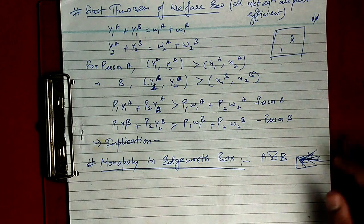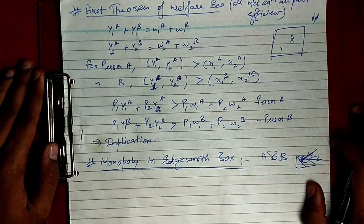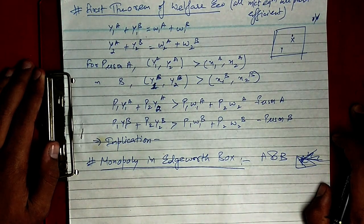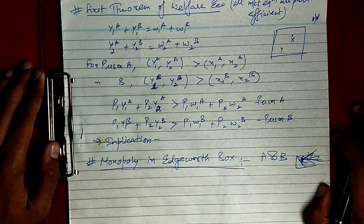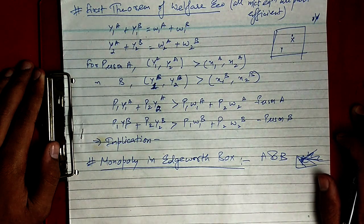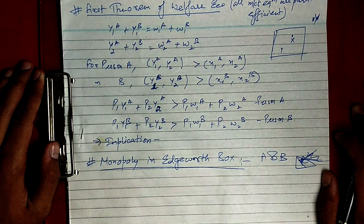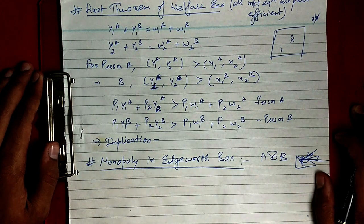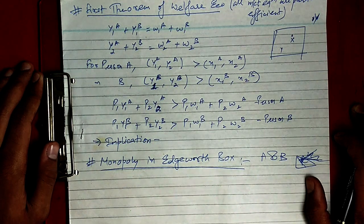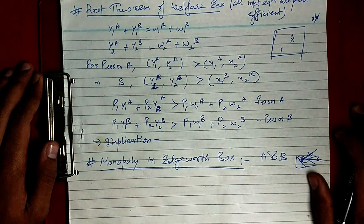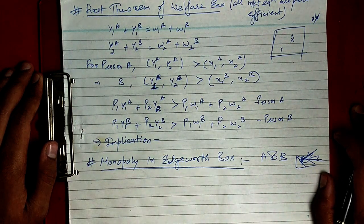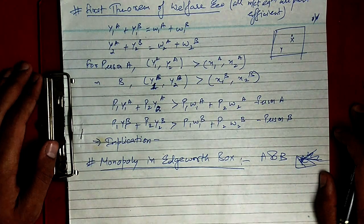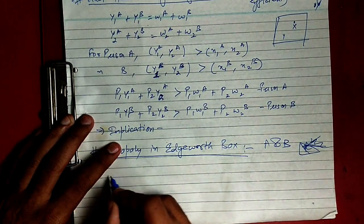Since the demand function is derived from the price offer curve (POC), consumer A — being the monopolist — also knows the price offer curve of consumer B. The POC of B shows all successive positions of consumer B's equilibrium at different prices. Consumer A maximizes utility given B's demand behavior, so A's equilibrium is attained when A's indifference curve is tangent to the POC of B.